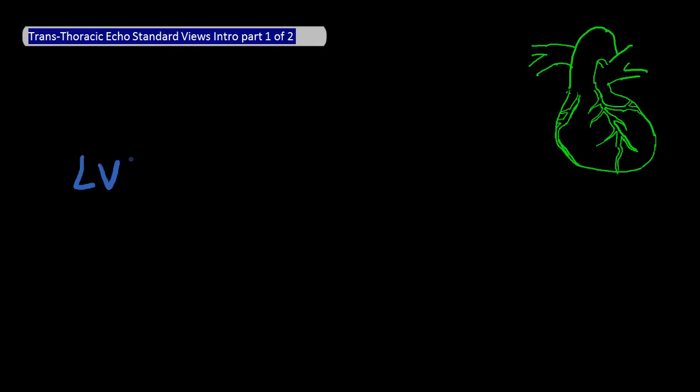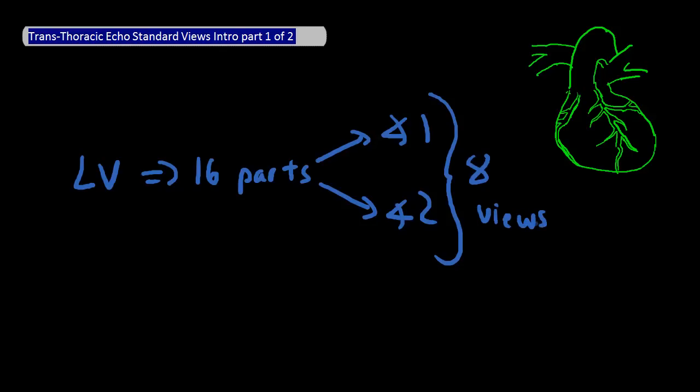Yes, the heart consists of much more than just the left ventricle, but I think you'd all agree that the left ventricle is the most important chamber of the heart, which is why the basic standard TTE would be skewed towards evaluating it more. One simplified way to think about a TTE is that it divides the left ventricle into 16 parts, and that each of these parts is evaluated from at least two different angles.